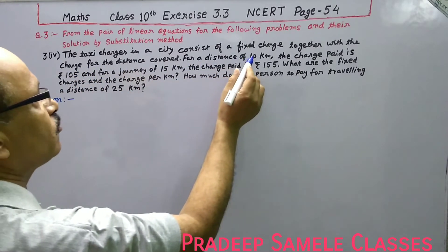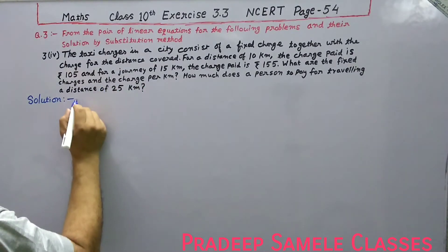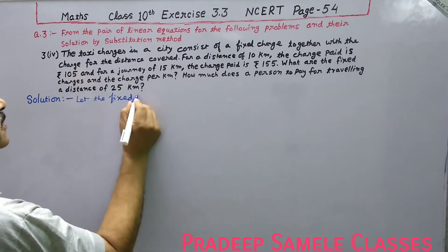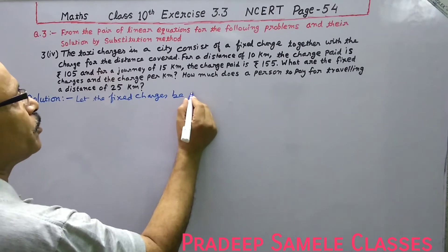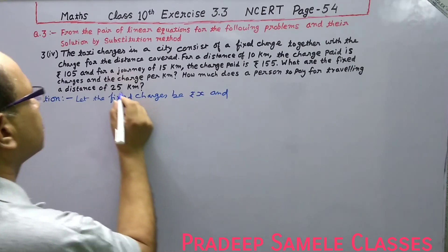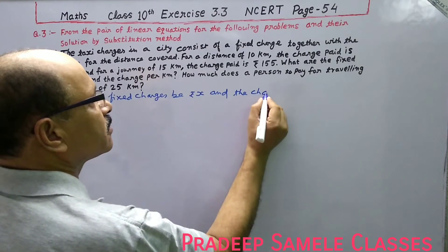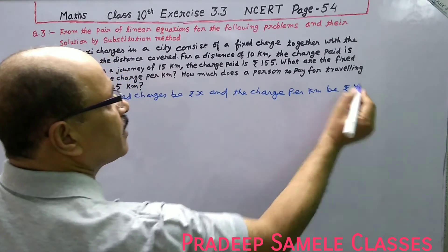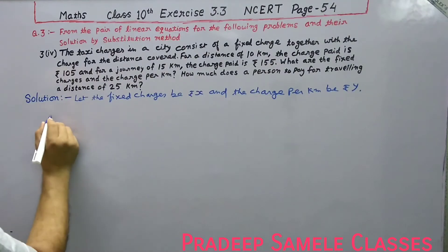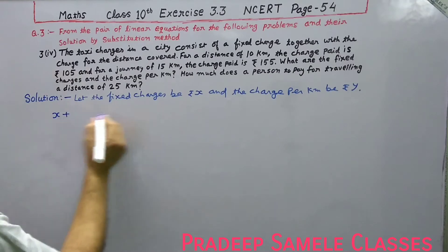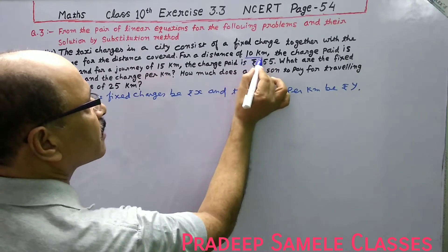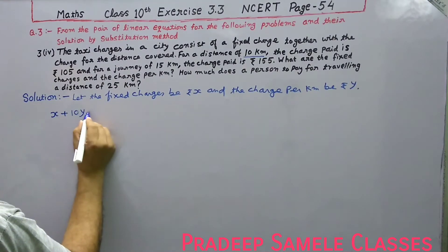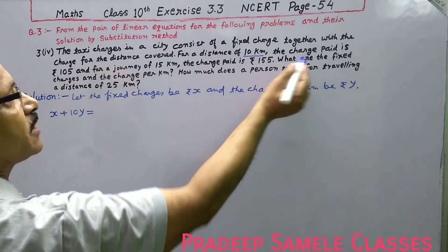Let the fixed charge be Rs. X, and the charge per kilometre be Rs. Y. So the fixed charge is X and the per kilometre charge is Y. For a distance of 10 kilometres, the per kilometre charge is Y, so 10 kilometres gives us 10 multiplied by Y.